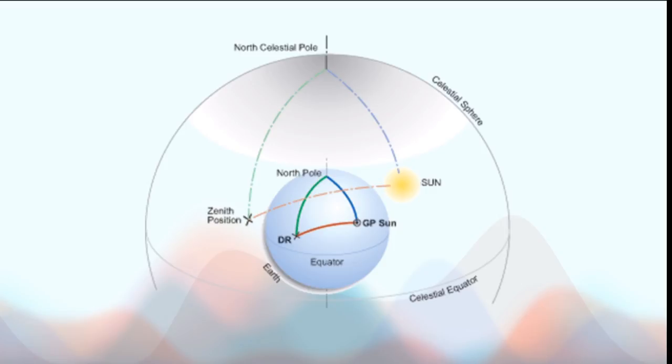So, on this diagram here, the inner sphere is the Earth, and the outer sphere is the sky above us, or the celestial sphere.